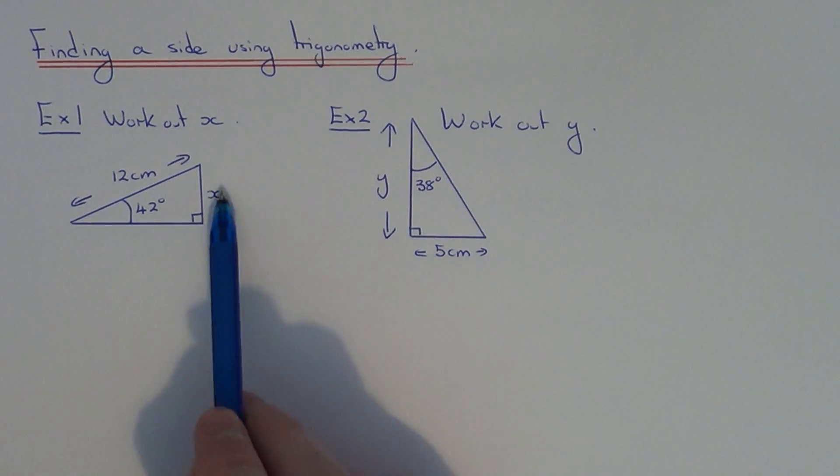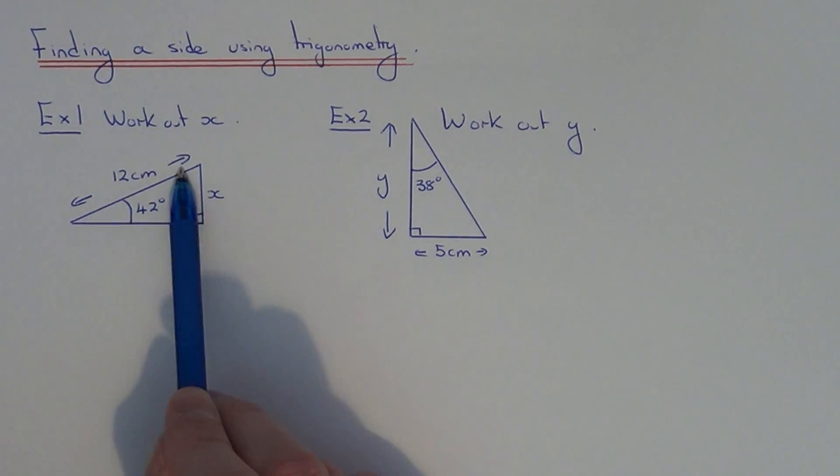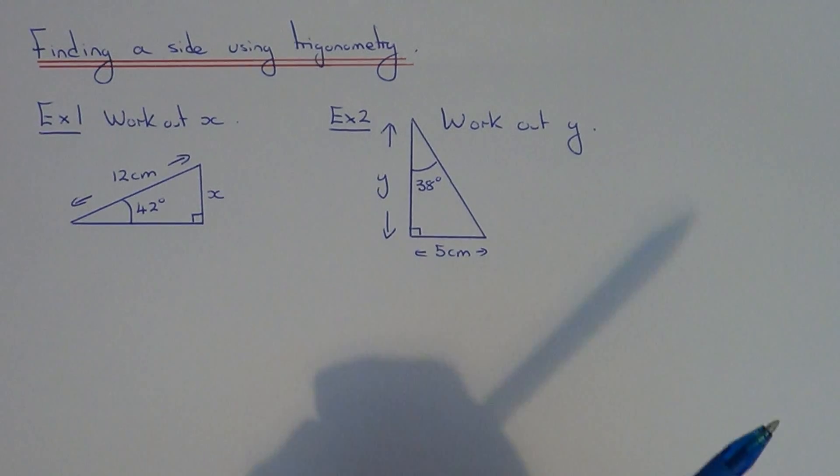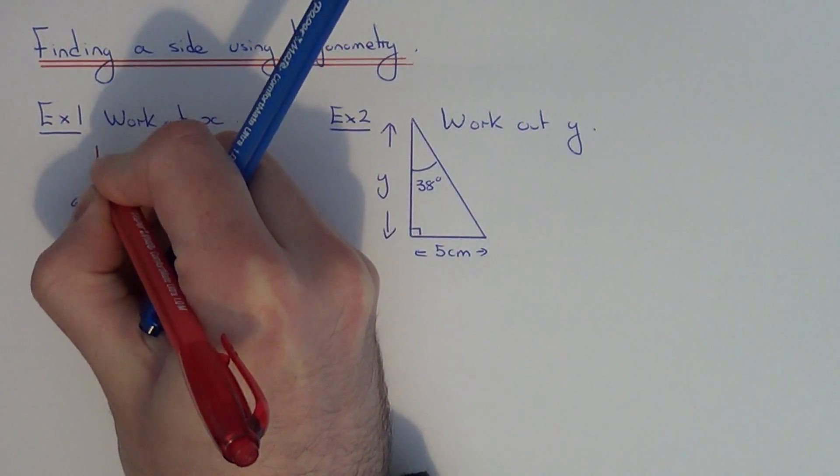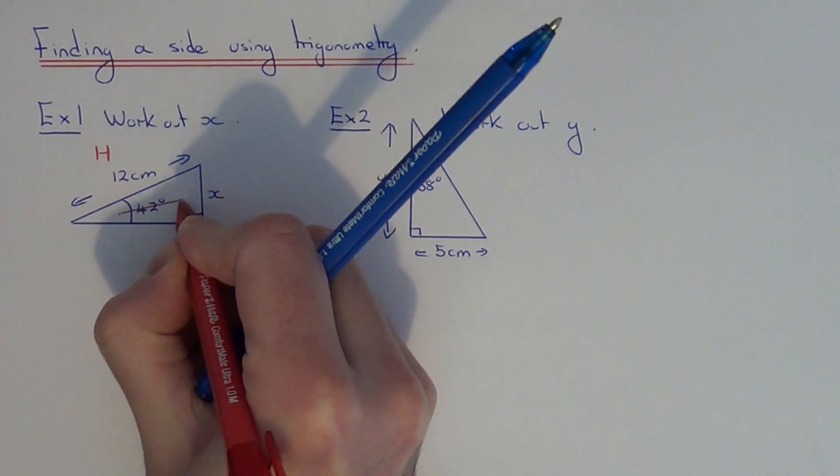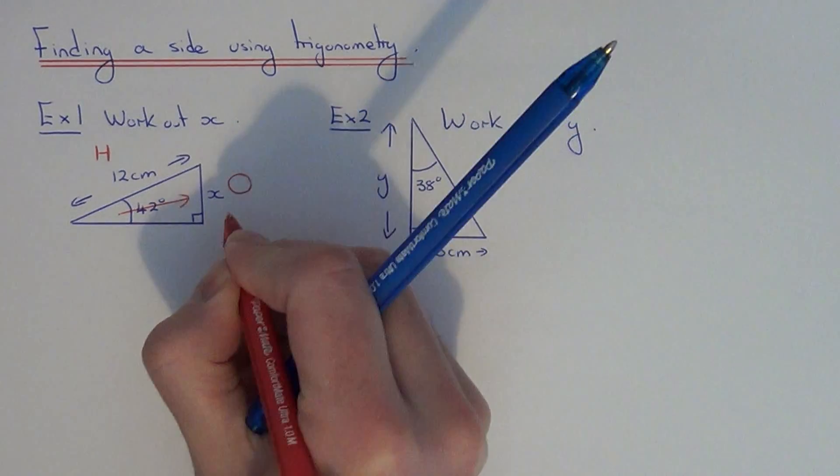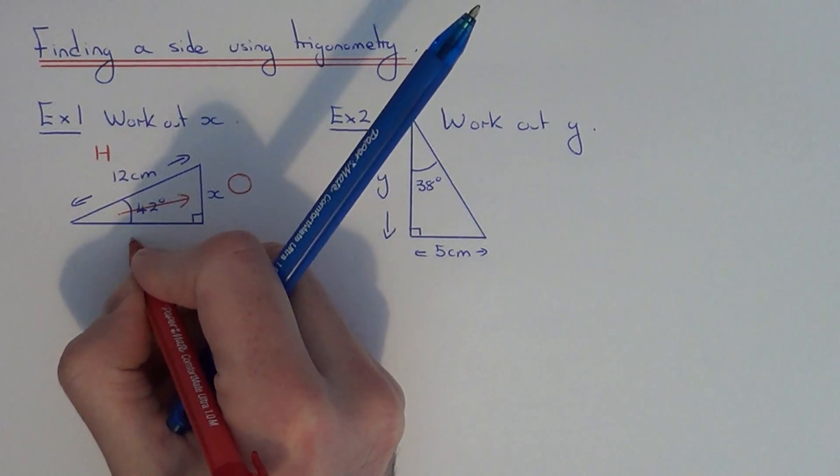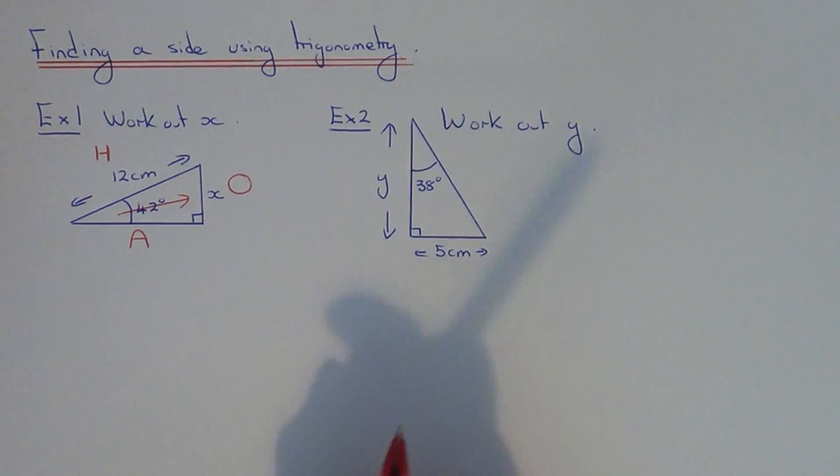So let's do example one. We've got to work out x. We have the angle which is 42 and the side length which is 12. Step one is to label up your triangle. The hypotenuse is the longest side of the right angle triangle—that one is H. The side opposite the angle that you are given is called the opposite side, so let's call that capital O. The third side of the right angle triangle is the adjacent side, so let's call that capital A. We have labeled up our triangle.